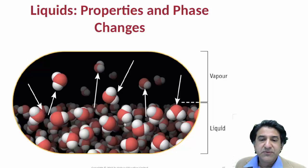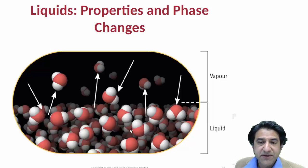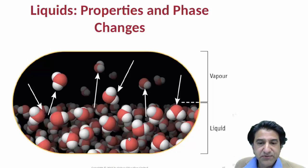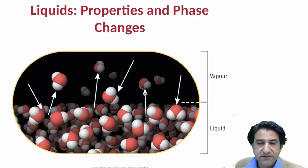This is a point where both of these substances happen to have the same degree of entropy and free energy. At that point, they can coexist — they can be in equilibrium. Delta G for this process is zero.